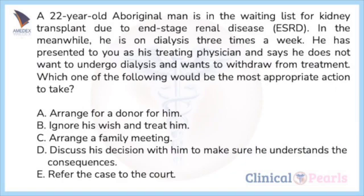Last question for this set: a 22-year-old Aboriginal man is on the waiting list for a kidney transplant due to end-stage renal disease. In the meanwhile he is on dialysis three times a week. He is presented to you as his treating physician and says he does not want to undergo dialysis and wants to withdraw from treatment. Which one of the following would be the most appropriate action? A) arrange for a donor for him, B) ignore his wish and treat him, C) arrange a family meeting, D) discuss his decision with him to make sure he understands the consequences, E) refer the case to the court. Patient autonomy is the cornerstone of all healthcare ethics.